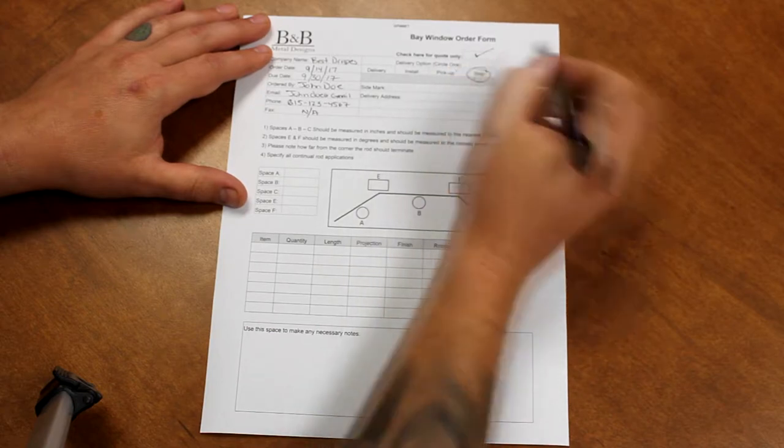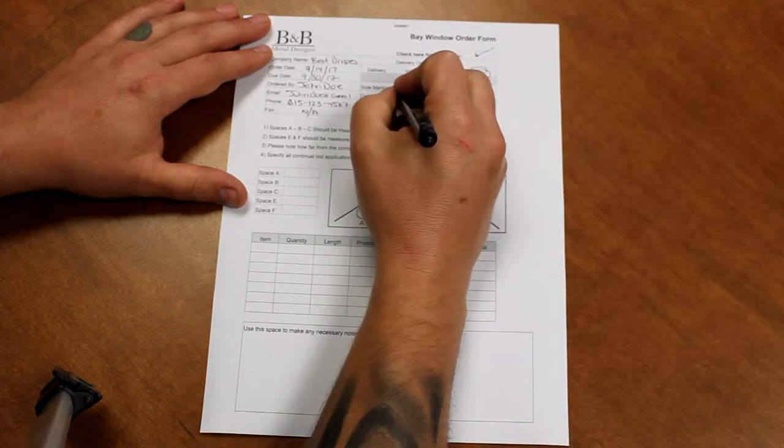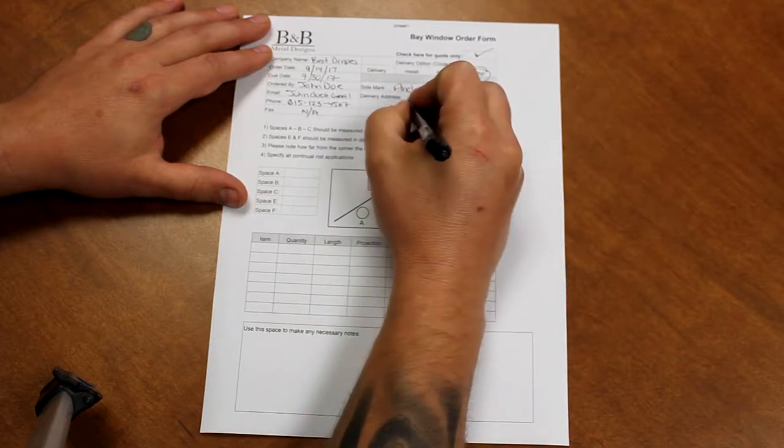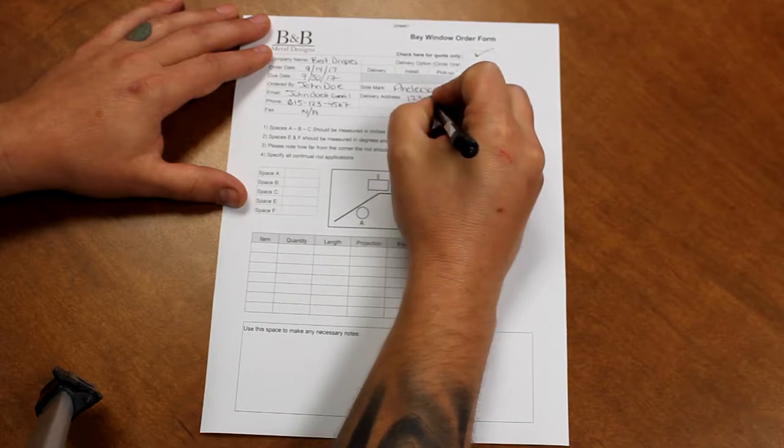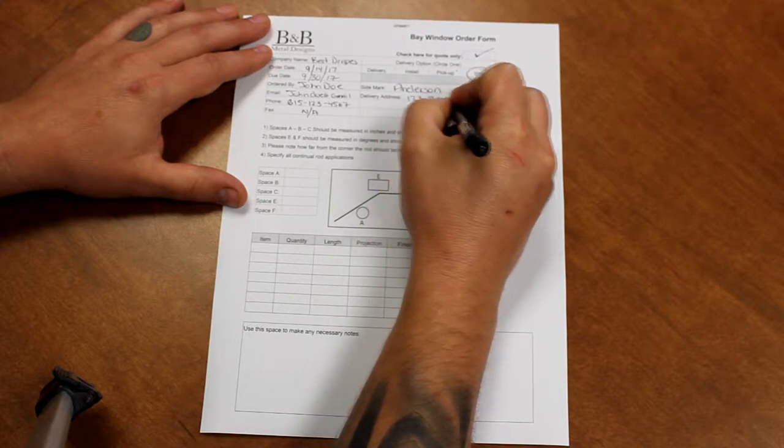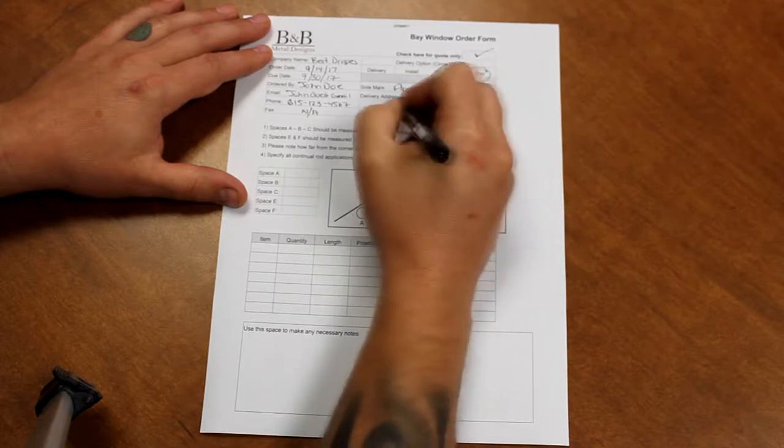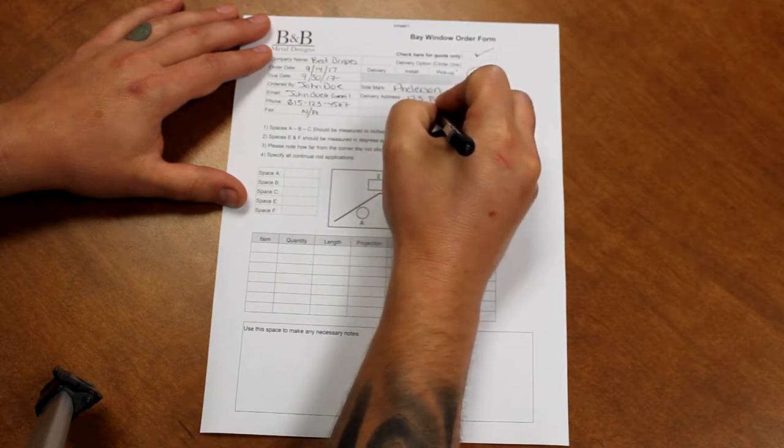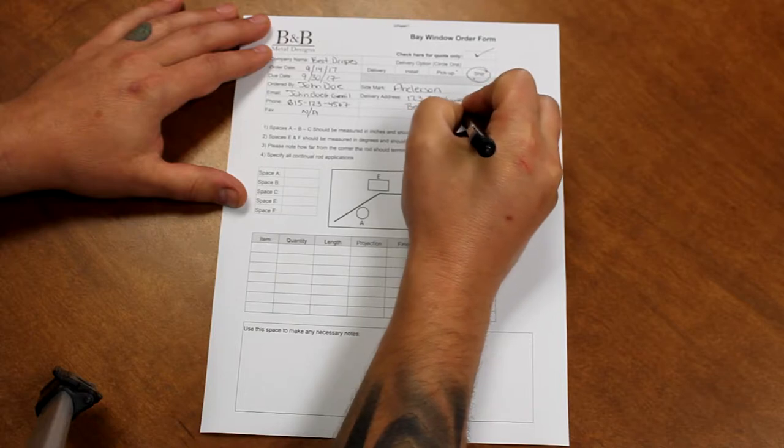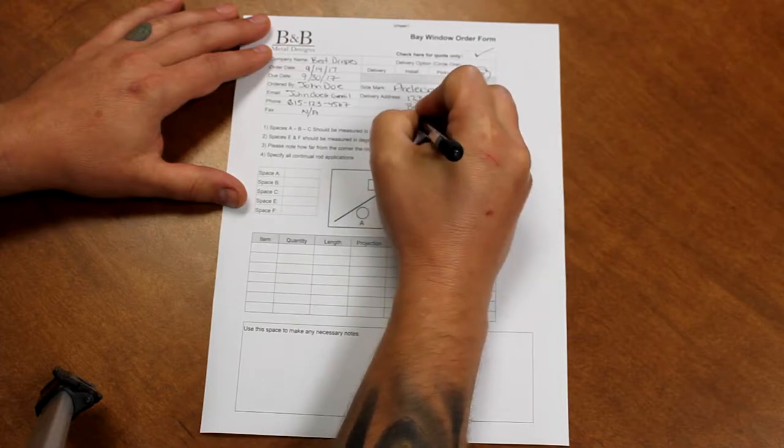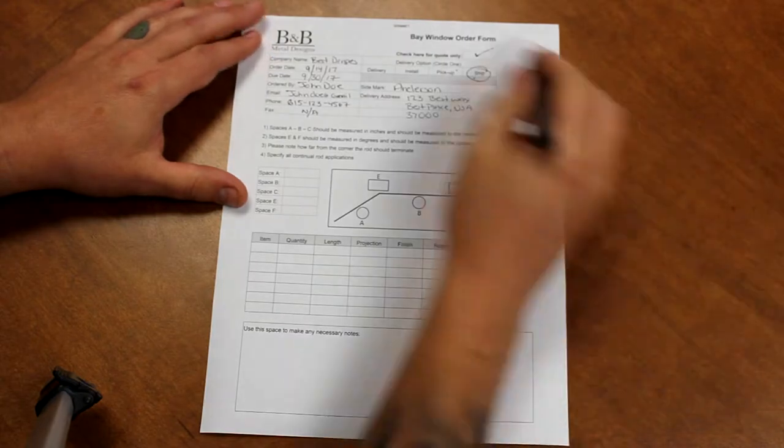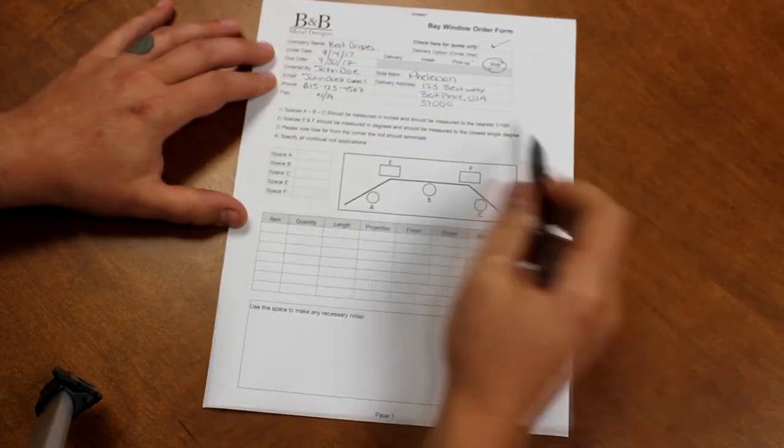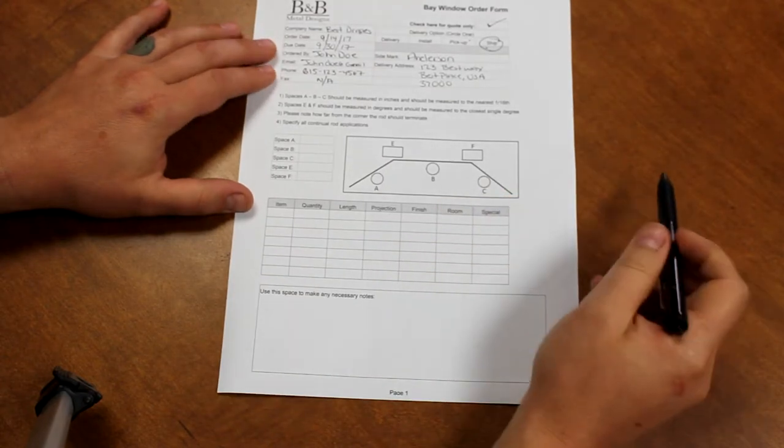From there we want to get a side mark to know which client this is. For this one we'll put Anderson. And then also a delivery address in case you want us to deliver this for your client. Please write clearly so that we can read all of your handwriting. And then from there we will go down and start writing in our information for the actual bay window.